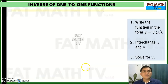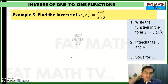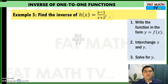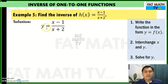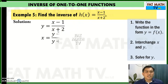Number 5: find the inverse of h of x equals x minus 1 over x plus 2. This is a rational function — the first four examples were linear and cubic functions. Same steps apply. Write it in the form y equals h of x, so y equals x minus 1 over x plus 2. Interchange x and y — make y into x and x into y — then solve for y.